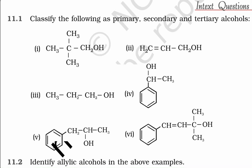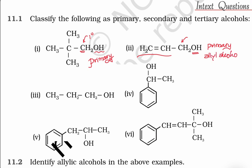Classify the following as primary, secondary, and tertiary alcohols. Here the OH group is attached to a primary carbon — one degree — so it is a primary alcohol. This one is also primary. This type is allyl alcohol; the OH group is attached to CH2, which is a primary carbon — a primary alcohol.